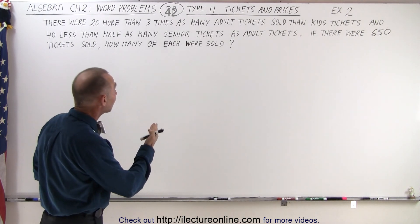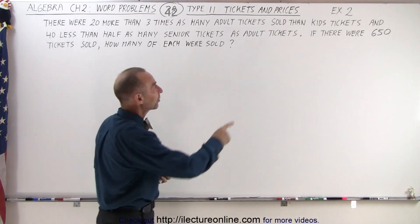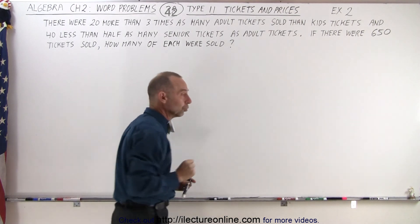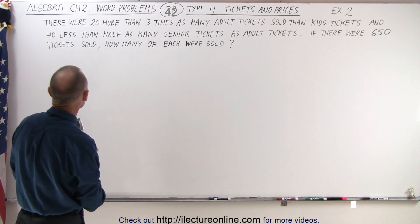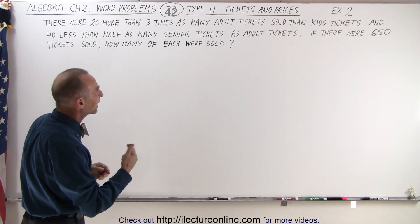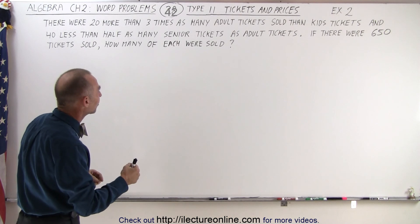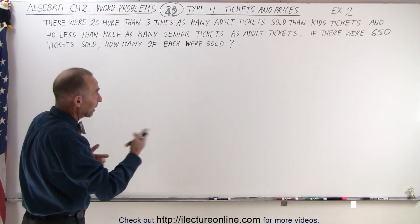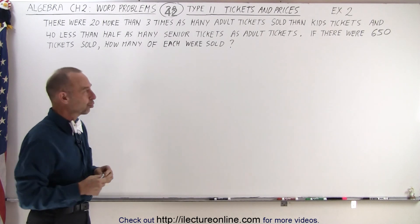We have adult tickets, kids tickets, and senior tickets. We're told that a total of 650 tickets were sold. Now the relationship between them is explained as follows: there were twenty more than three times as many adult tickets sold compared to kids tickets, and forty less than half as many senior tickets as adult tickets. So given that there are 650 tickets sold, how many of each were sold?